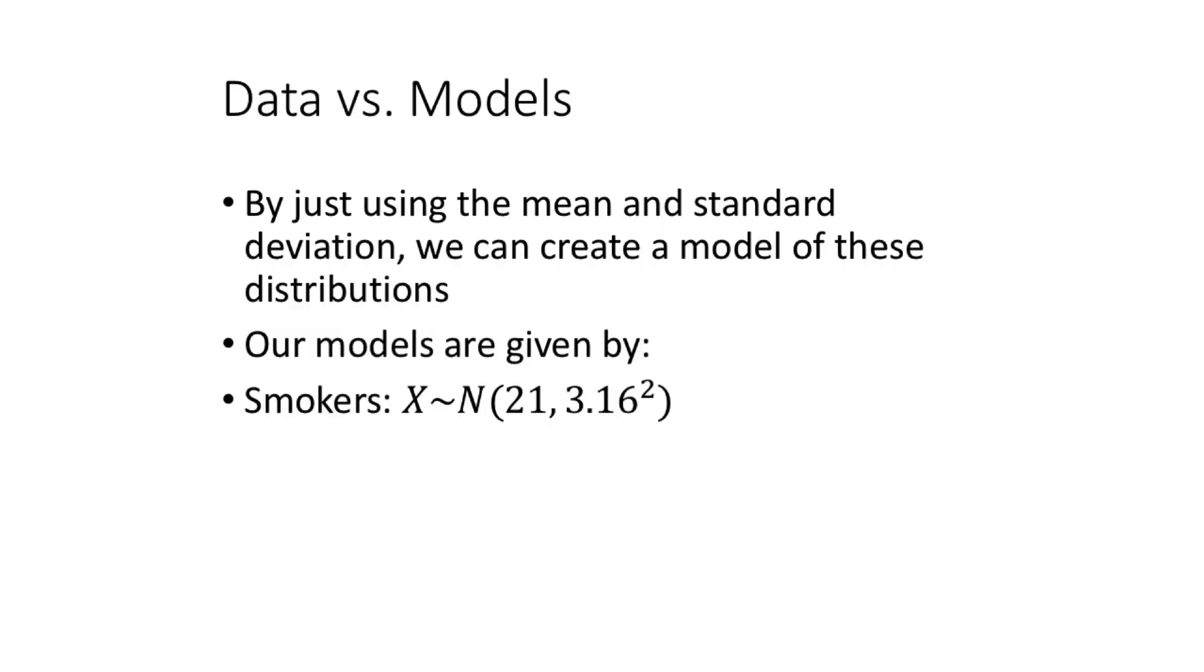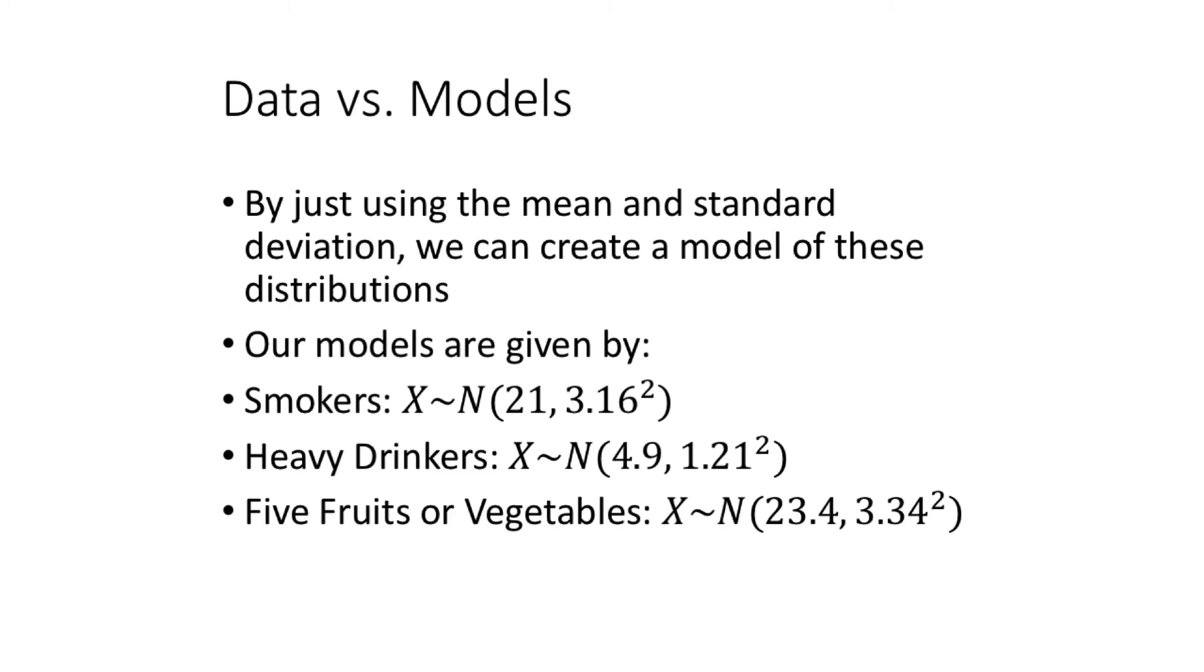So these are the models. We have smokers, which is given by a mean of 21% and a variance of 3.16 squared. Then we have heavy drinkers, which is normally distributed roughly, centered on 4.9% with a variance of 1.21 squared. Then we have the percent eating fruits or vegetables. That's centered on 23.4% and its variance is 3.34 squared. We have these three different models based on these summary statistics from our data.